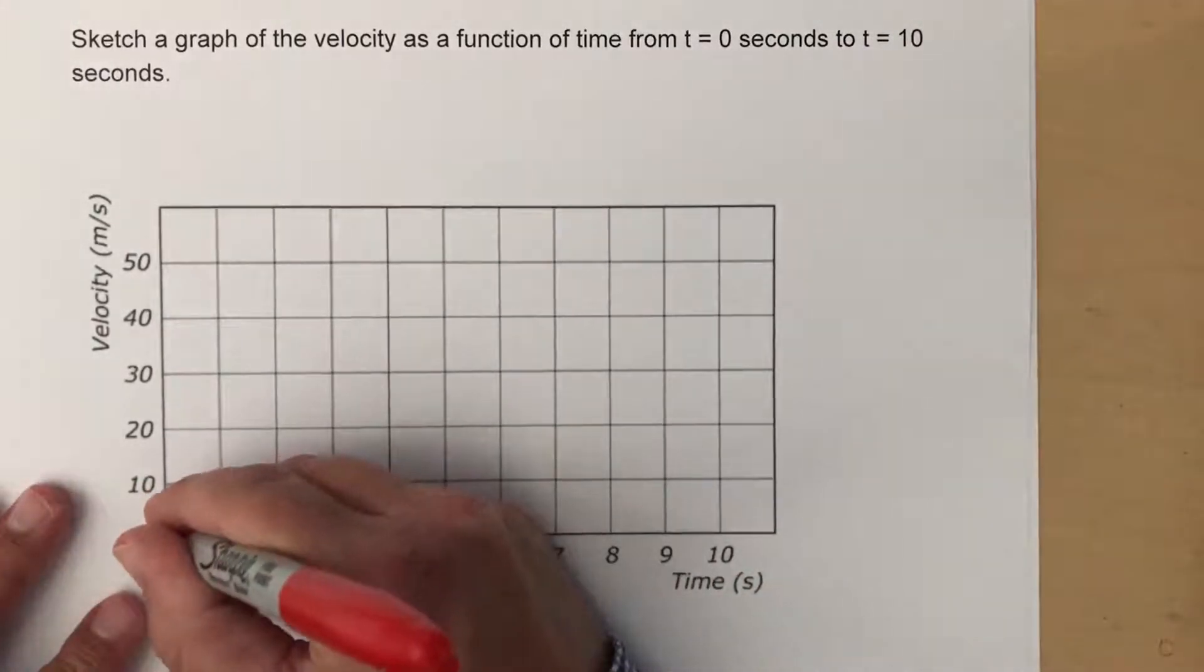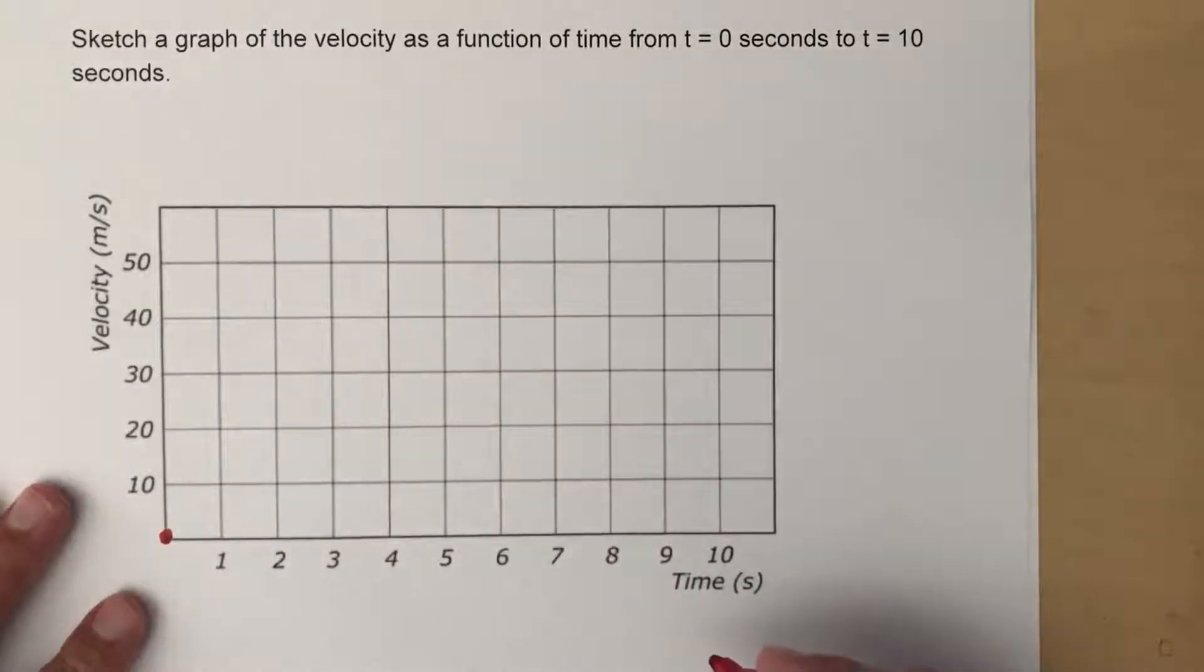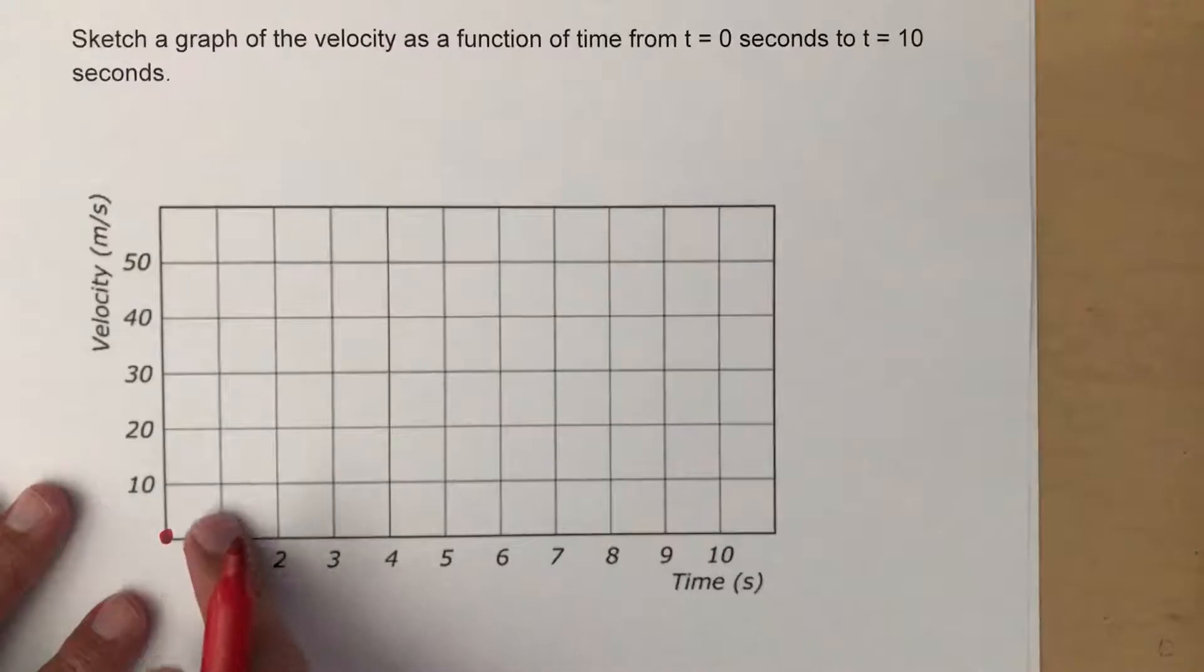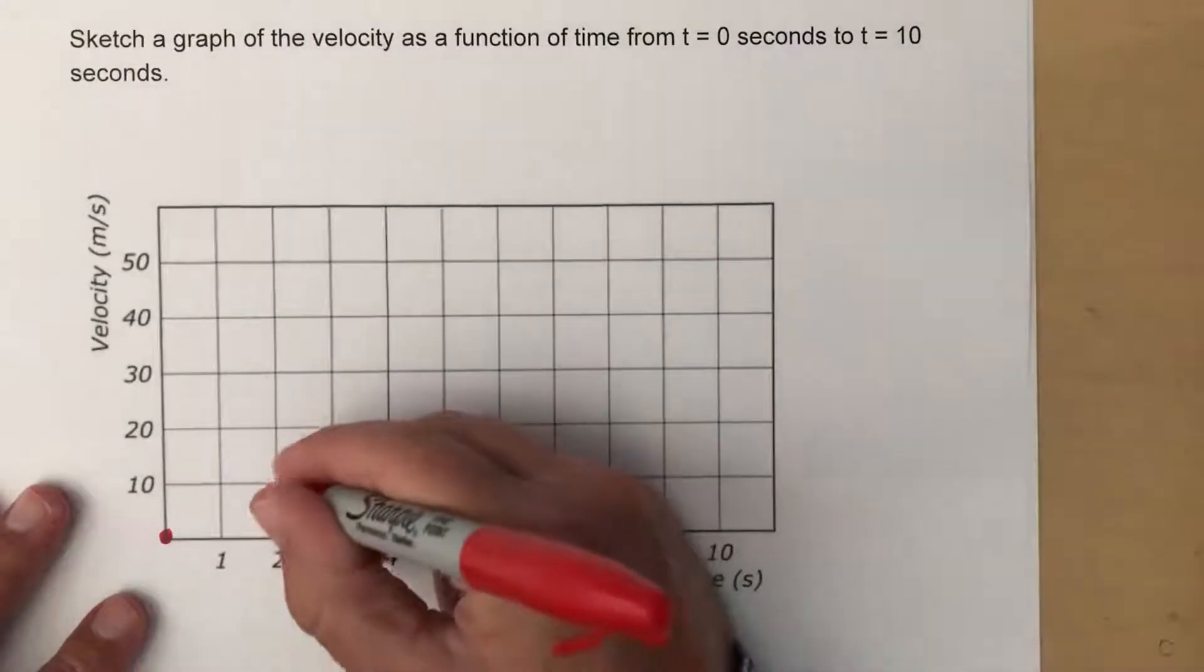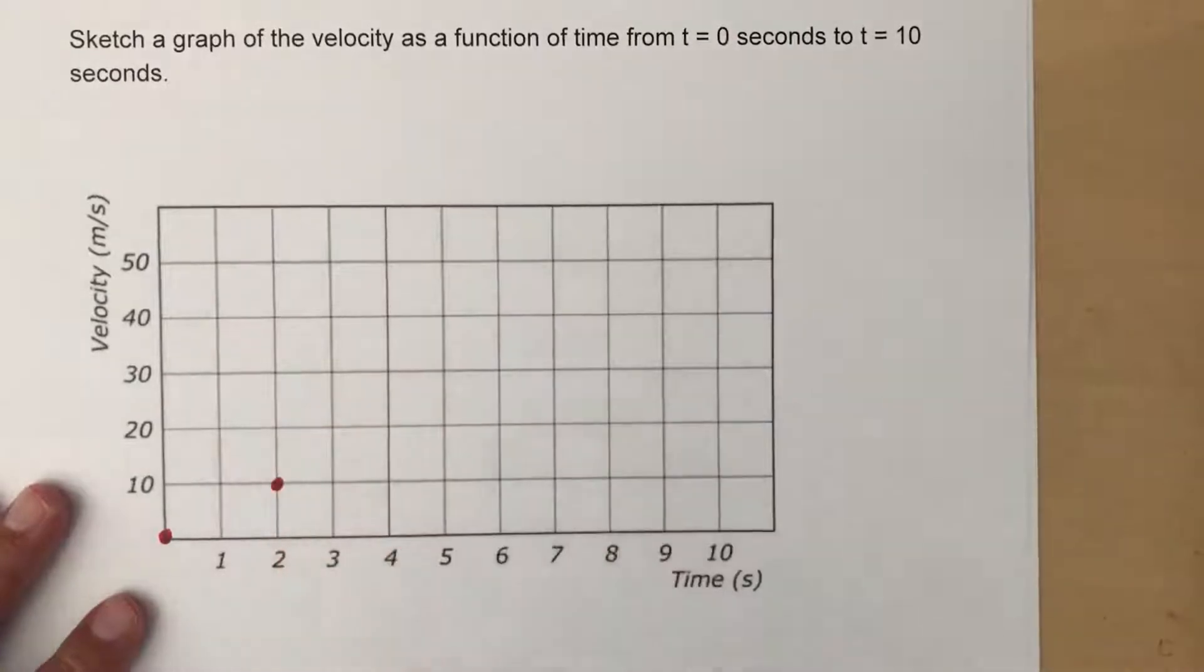At time 0 we know we have 0 meters per second, and if we're accelerating at 5 meters per second squared, then after 1 second we'll be going 5 meters per second and after 2 seconds we'll be up to 10. That's a bit easier to mark, so I'm going to mark those two.